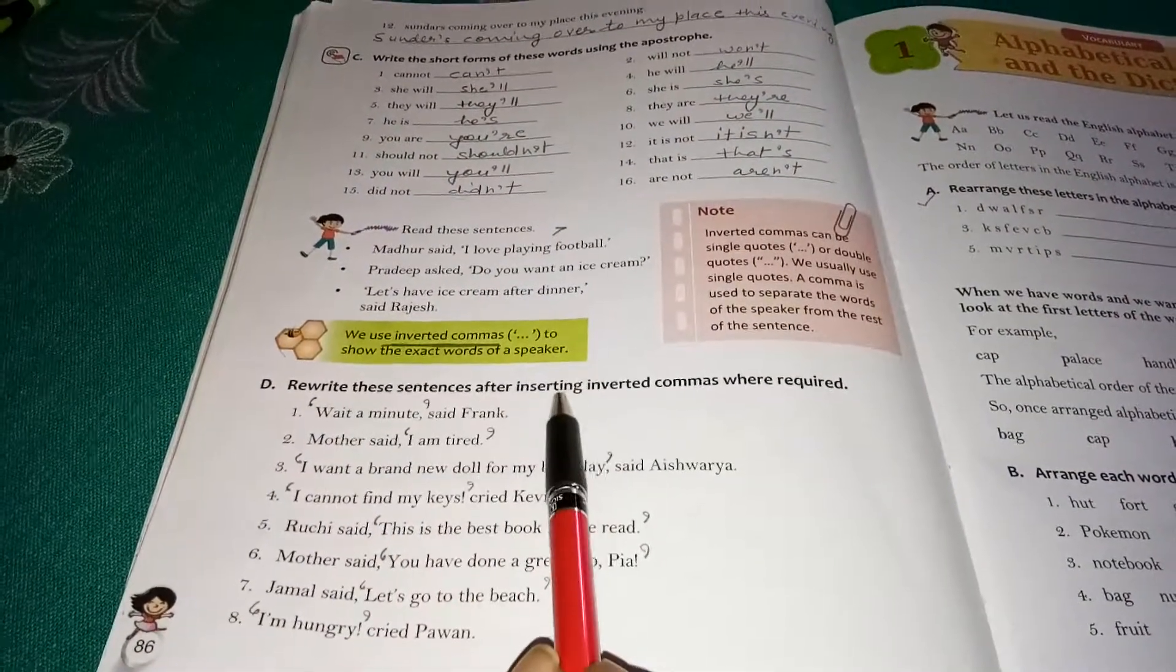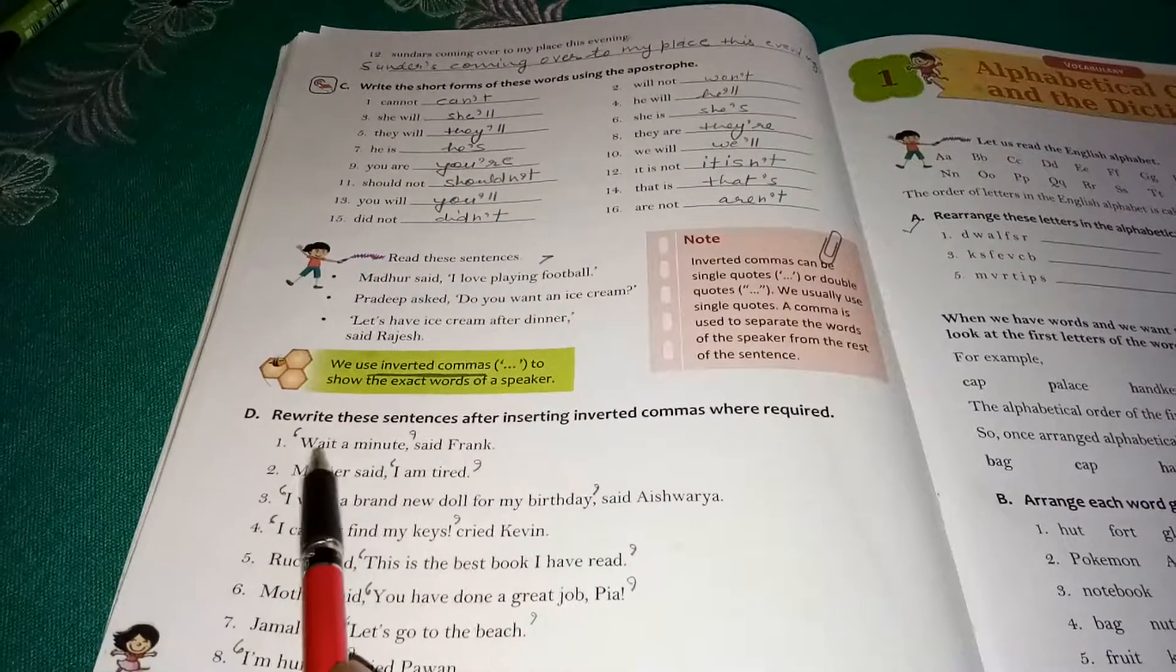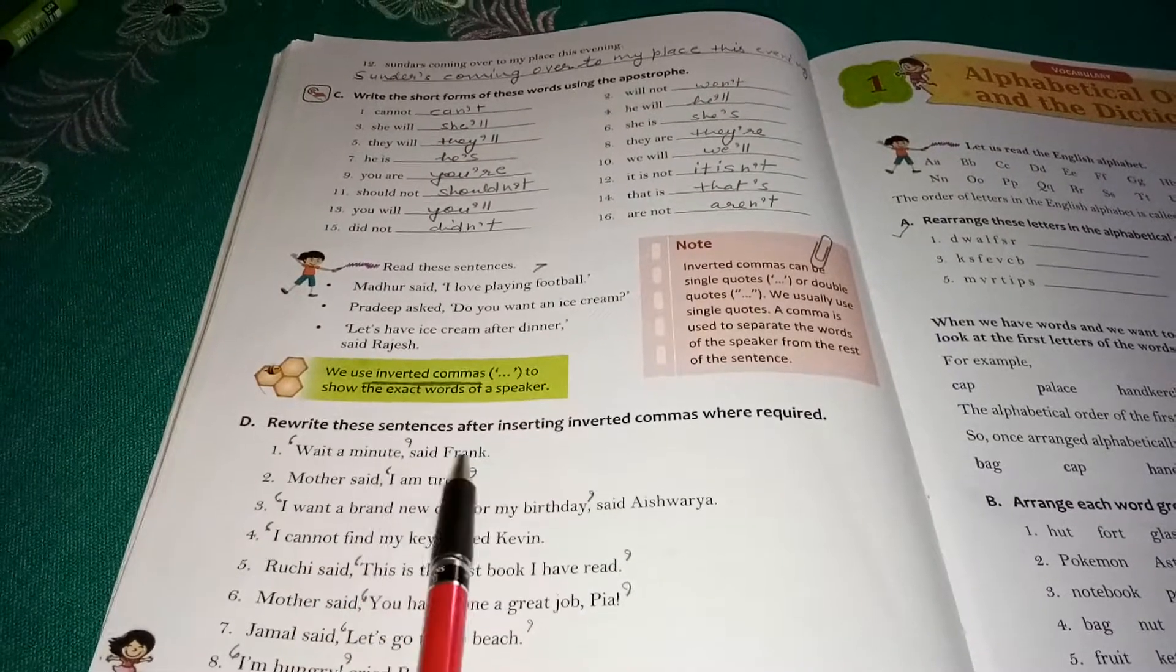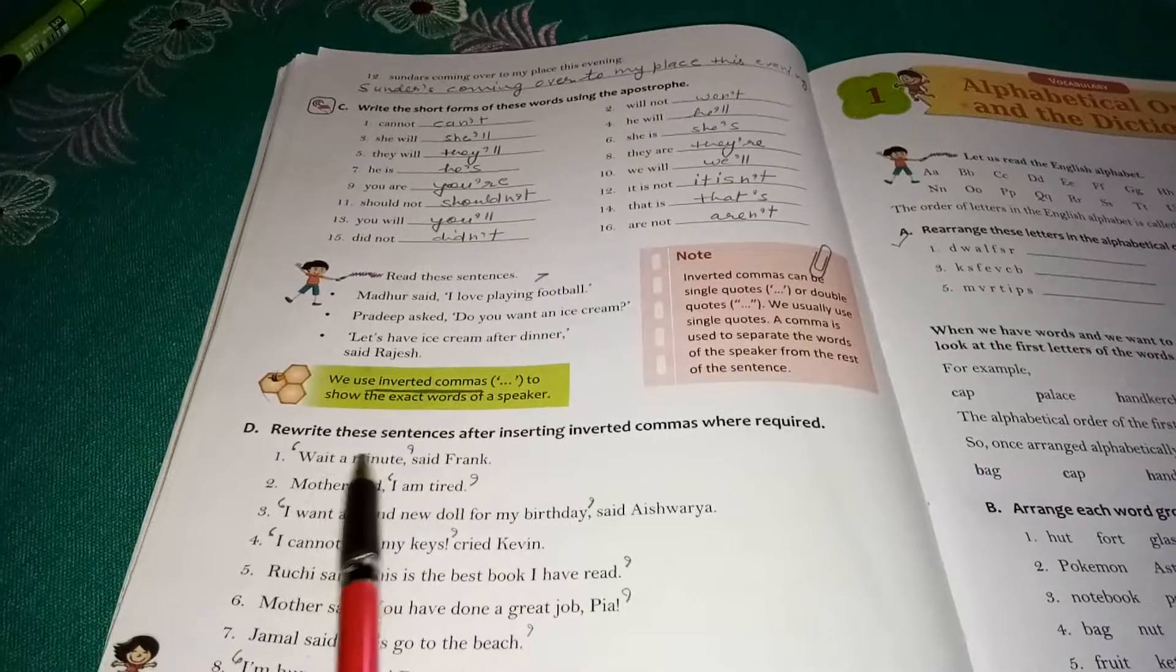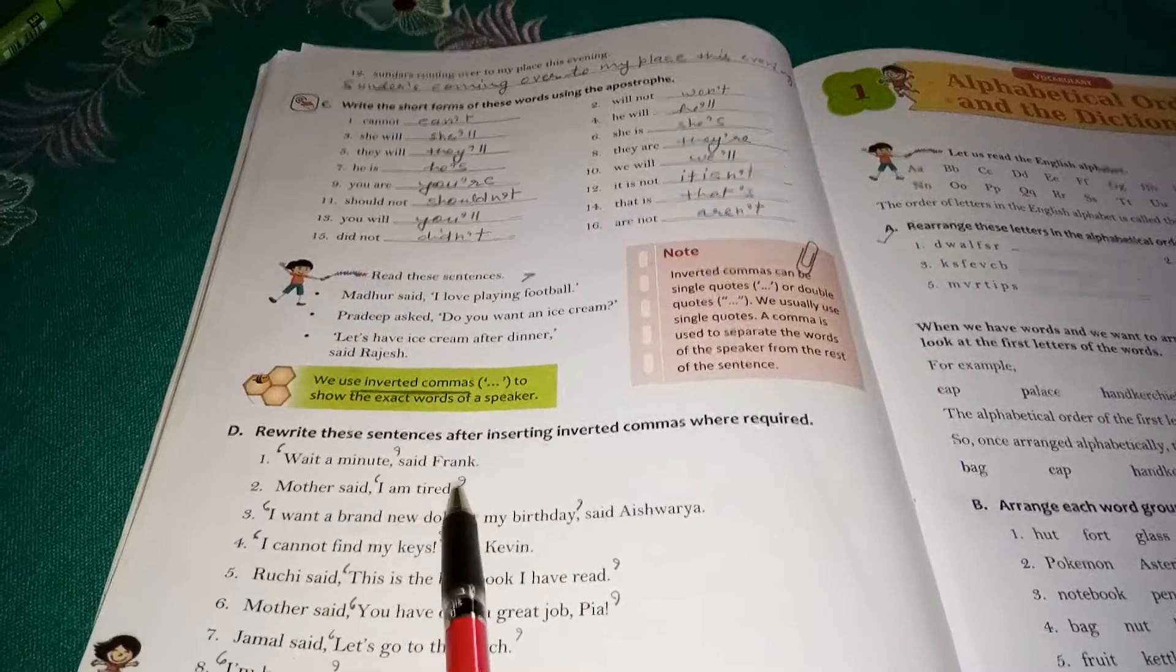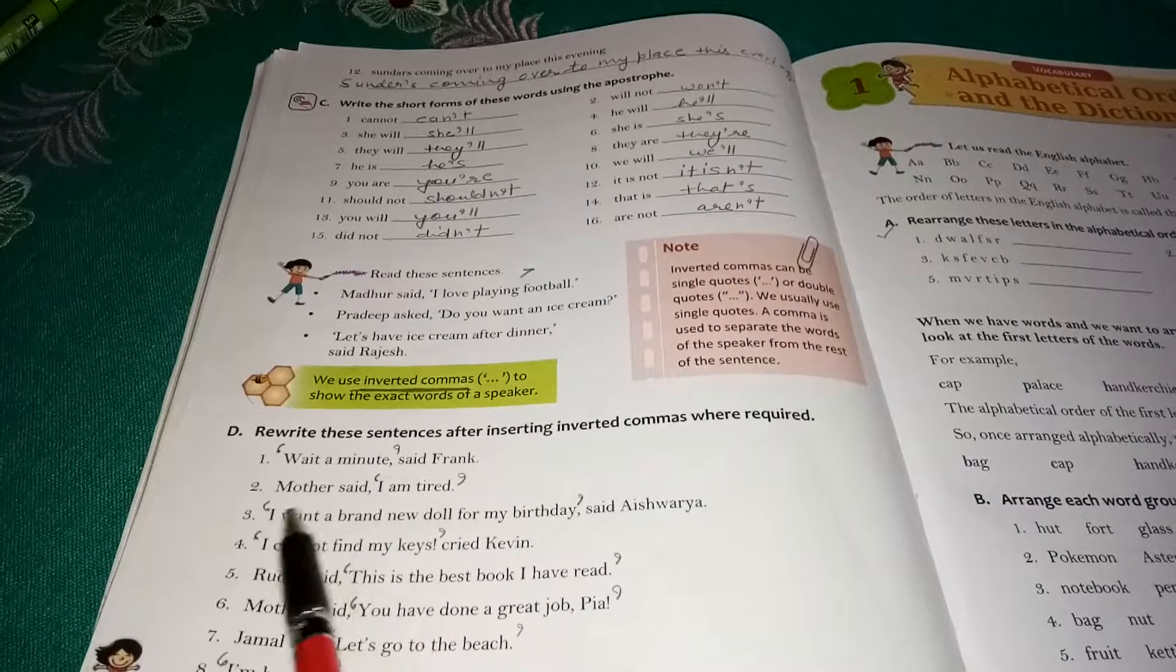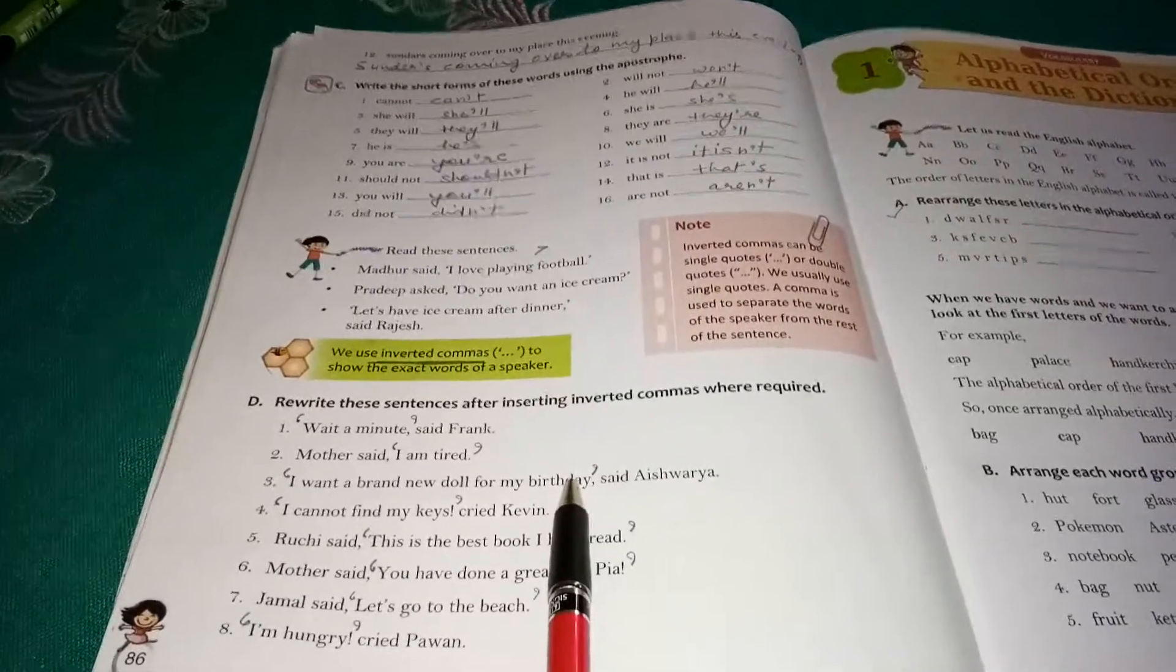Let's do exercise D, children. Rewrite these sentences after inserting inverted commas where required. "Wait a minute," said Frank. This is the dialogue of Frank, so it is written in inverted comma. Okay. Mother said, "I am tired." You have to put inverted commas here, inverted comma started, inverted comma closed. "I want a brand new doll for my birthday," said Ashwarya. You can see I have put inverted commas here.